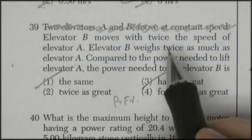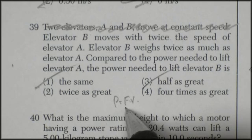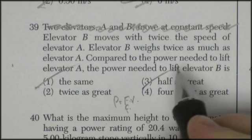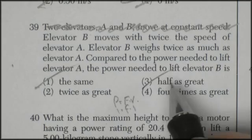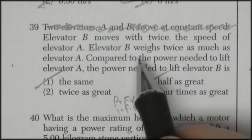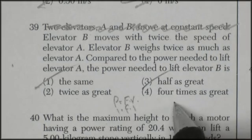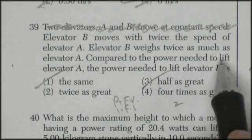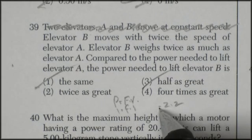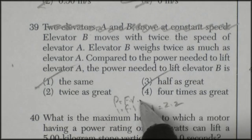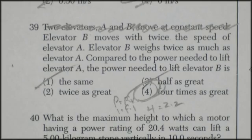So for A, it would be some force times some velocity, one times one. And for elevator B, it's going to be twice the velocity, and it's twice as massive. So it's going to be twice the force. So two times two is four. That's what I'm thinking.